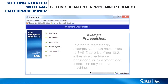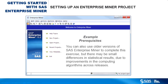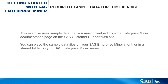In order to recreate this example, you must have access to SAS Enterprise Miner 13.2, either as a client-server application or as a standalone installation on your local machine. You can also use older versions of SAS Enterprise Miner to complete this exercise, but there may be small differences in statistical results due to improvements in the computing algorithms across releases. This exercise uses sample data that you must download from the Enterprise Miner documentation page on the SAS Customer Support website. You can place the sample data files on your SAS Enterprise Miner client or in a shared folder on your SAS Enterprise Miner server.